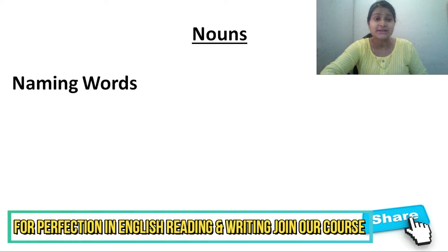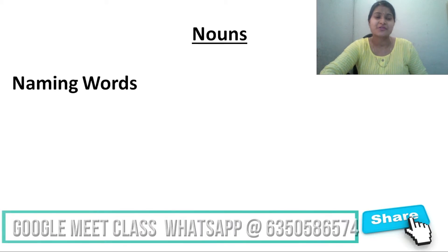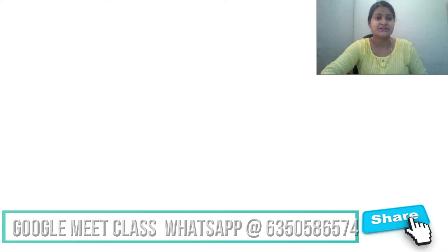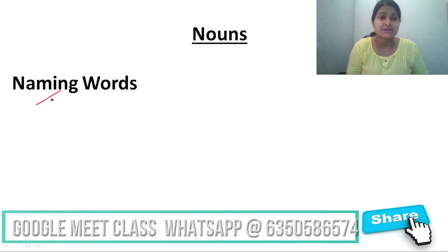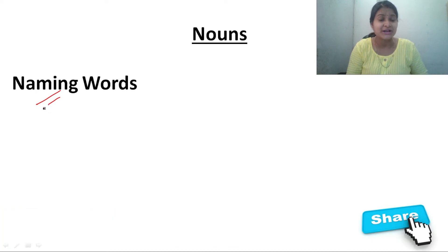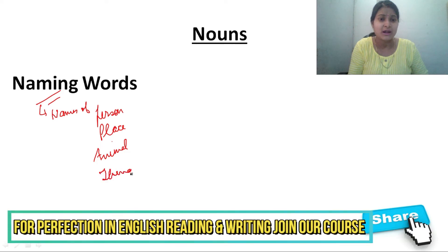Noun is naming words. From class first, we are studying what is a noun. Nouns are naming words. Naming words, so what are these naming words? If you can tell it again, then what will you say? Names of person, place, animal, and thing. The names of these things are called noun.